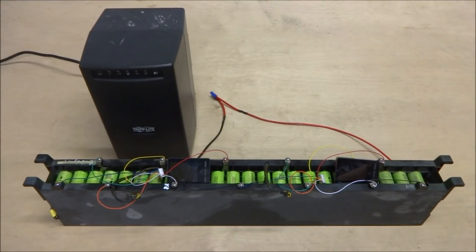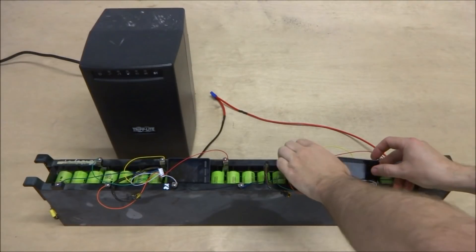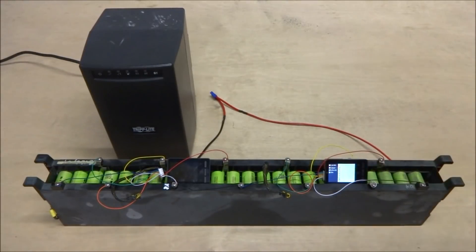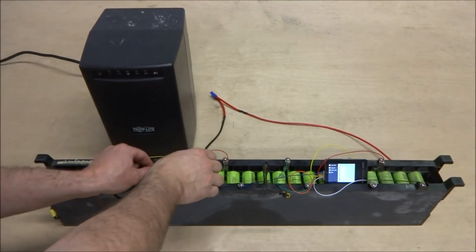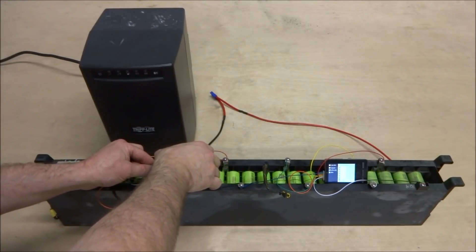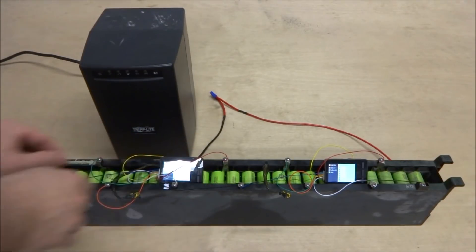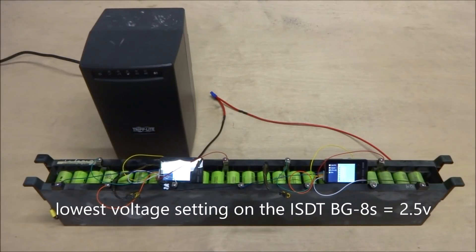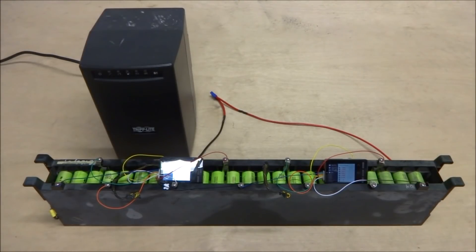So if I go ahead and connect these meters, you should be able to see the voltages. Currently the voltages are low and the balancers are giving an alarm because the minimum voltage for these is 2.5 volts. So they're all roughly at or about 2.5 volts per cell.